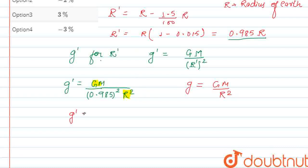So here g prime equal to g divided by 0.985 whole square. So the new g prime will be equal to g into 1.0306. So this is the new g prime, equal to 1.0306 into g, and here we need to calculate the change.